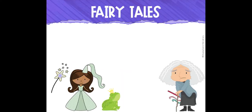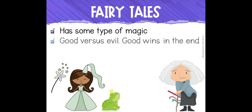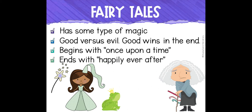So then we have some specific stories. These are fairy tales. Fairy tales have some type of magic, good versus evil, good wins in the end, and begins with 'once upon a time.' Normally when you have a story that begins with 'once upon a time,' it would be considered a fairy tale, and it ends with 'happily ever after.'